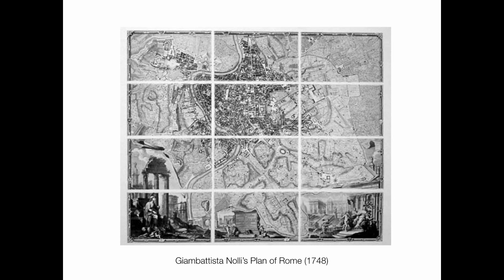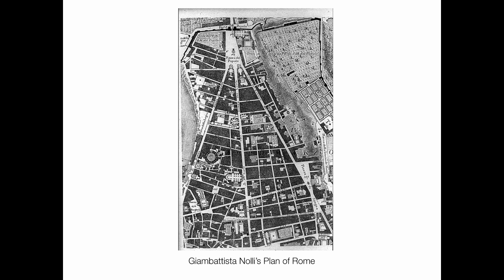Nolli drew Rome not as a map of buildings but as a diagram of public and private space. Everything black on the map is private space; everything white is public space. The city streets are obviously white, but interestingly the interiors of Rome's churches are also shown as public space — you can just walk right in. So we see the squares like Piazza del Popolo, but also all the little churches, giving a good sense of what is accessible versus private.